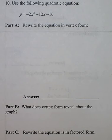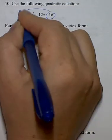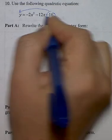Using the following quadratic equation to rewrite it in vertex form. In vertex form, I'm going to start by taking the constant and moving it to the opposite side. So to move a negative 16 over, I'm going to add 16.